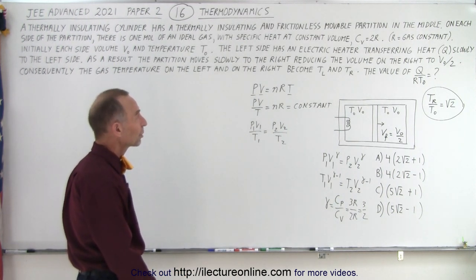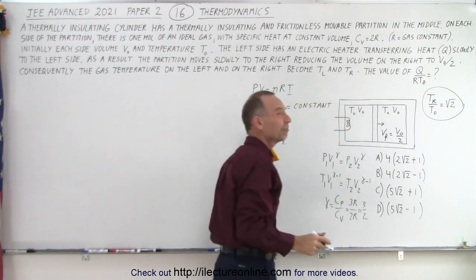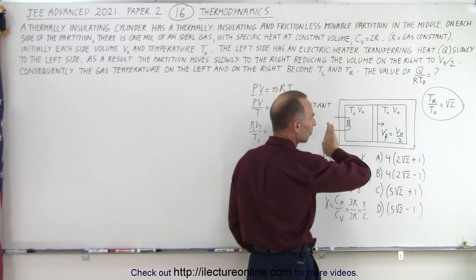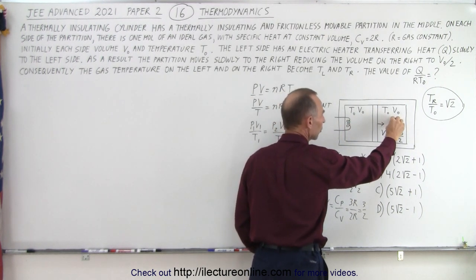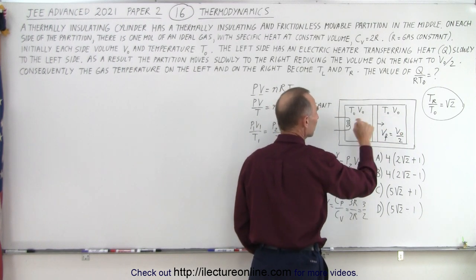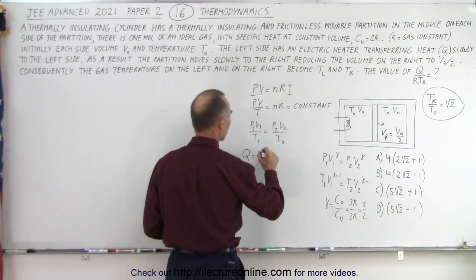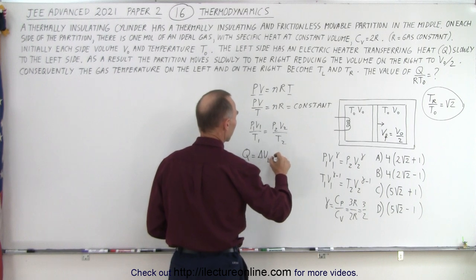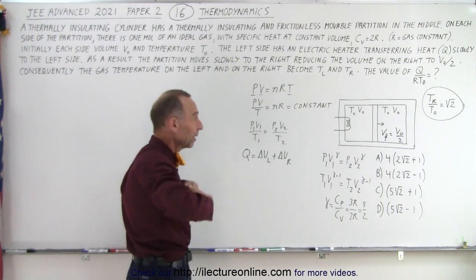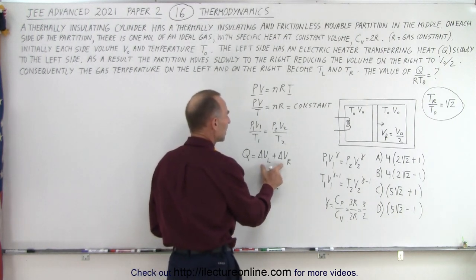How do we figure out what Q is equal to? R is a constant, T sub nought is a constant, so we need to find the value for Q. Q is the amount of heat added to the left side, which in part pushes the piston to the right, meaning the gas on the left does work on the right. So all the energy absorbed by the left and right sides must equal Q contributed to the left side. Essentially, Q equals the change in internal energy on the left side plus the change in internal energy on the right side, because the heat can't go anywhere else.